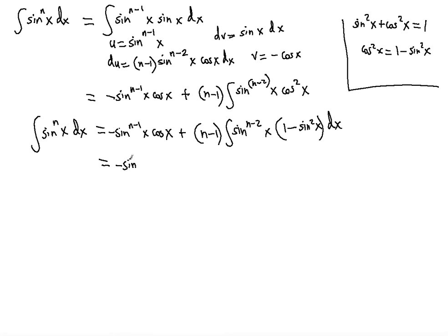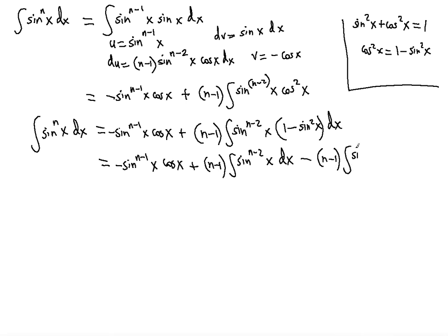Expanding that gives us negative sine x to the n minus 1 power times cosine x, plus n minus 1 times the integral of sine x to the n minus 2 power — splitting this integral — minus n minus 1 times the integral of sine x to the nth power, because sine squared x times sine to the n minus 2 of x is sine x to the nth power. This is exactly what we want, because now we can add this integral to the left side.